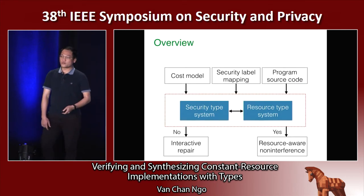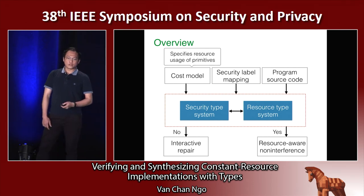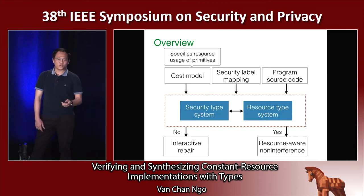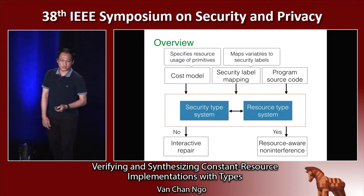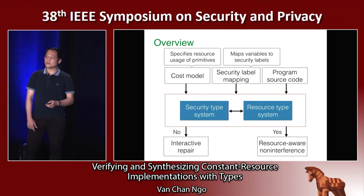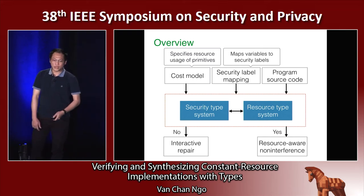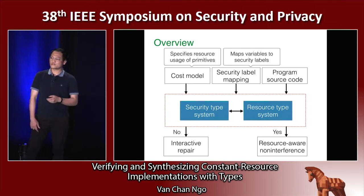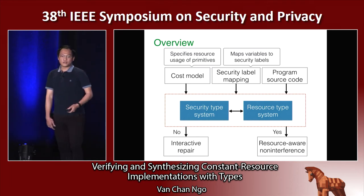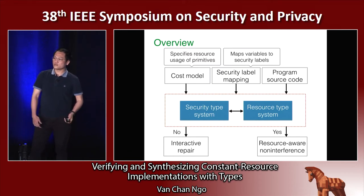From a high-level view, our approach works as follows. First, the user provides our type system a cost model, which specifies the resource consumption of primitives in the programming language. Second, the user provides a security label mapping that maps variables to their security level and the program source code. Then the type system checks whether the program satisfies the resource-aware non-interference property. If not, the user can use the interactive and automatic repair procedure to transform the ill-typed program into a well-typed program.